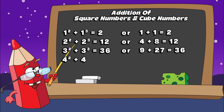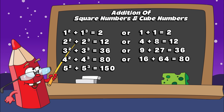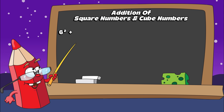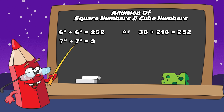Four square plus four cube equals eighty. Or sixteen plus sixty-four equals eighty. Five square plus five cube equals one hundred and fifty. Or twenty-five plus one hundred and twenty-five equals one hundred and fifty. Six square plus six cube equals two hundred and fifty-two. Or thirty-six plus two hundred and sixteen equals two hundred and fifty-two. Seven square plus seven cube equals three hundred and ninety-two. Or forty-nine plus three hundred and forty-three equals three hundred and ninety-two.